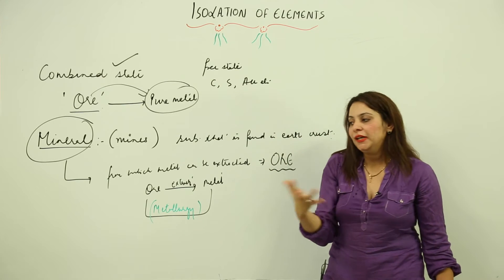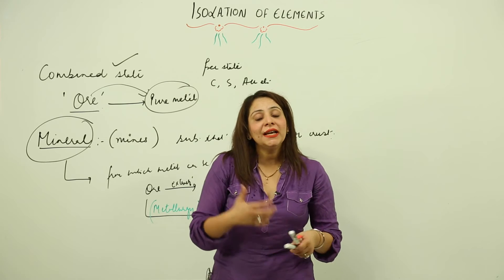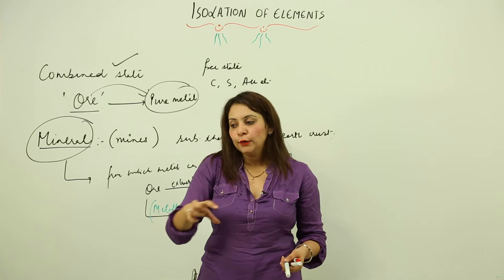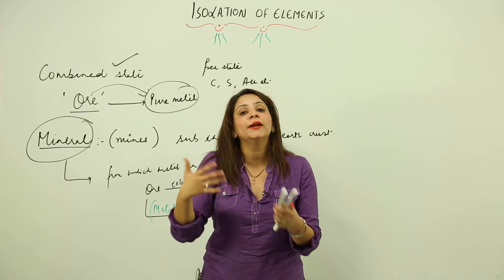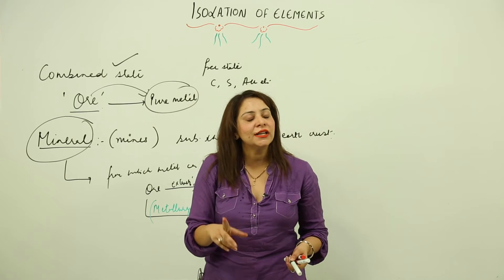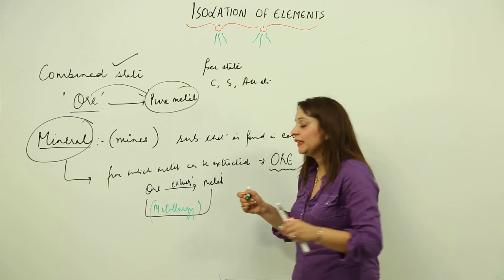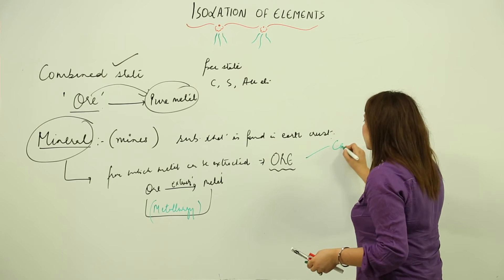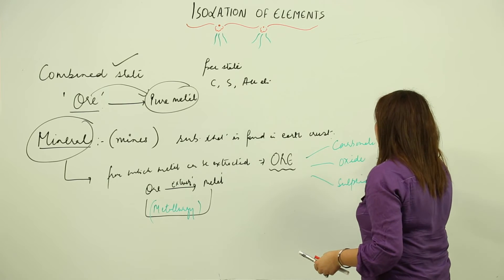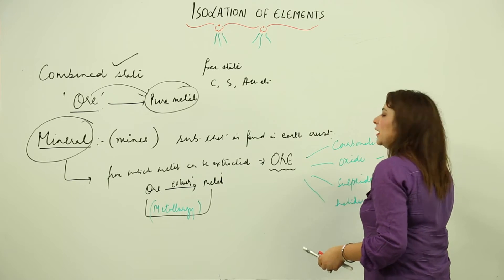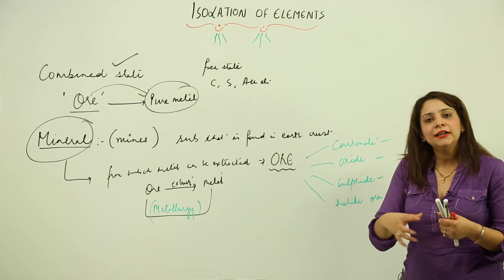An element is not limited to only one or two ores; we get a variety of ores. Some metals are combined with oxygen, some with carbonate, and some with sulphur. Each element can have more than one ore. The main types of ores found in nature are carbonate ores, oxide ores, sulphide ores, and halide ores. These are the common ores where elements are combined with carbonate, oxygen, sulphur, or a halogen.